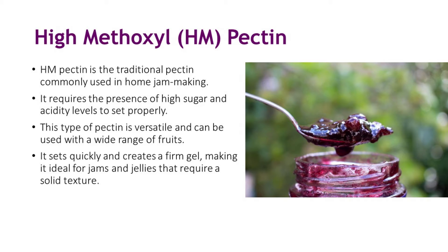High-methoxyl pectin is the traditional pectin commonly used in home jam making. It requires the presence of high sugar and acidity levels to set properly. This type of pectin is versatile and can be used with a wide range of fruits. It sets quickly and creates a firm gel, making it ideal for jams and jellies that require a solid texture.